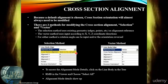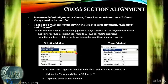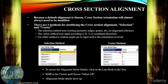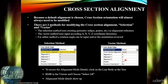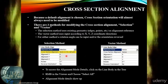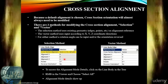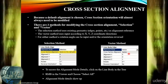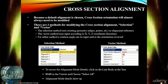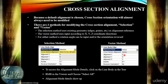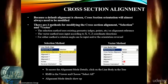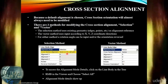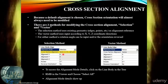The selection method uses existing geometry as the reference for alignment — you select geometry to align the cross-section. The vector method allows you to explicitly assign the vector to be used for alignment. By selection, the XYZ value input fields are greyed out, whereas choosing vector gives access to the XYZ components to define that vector. In both cases, you can define a rotation angle and a reverse orientation to make further adjustments to the cross-section alignment.